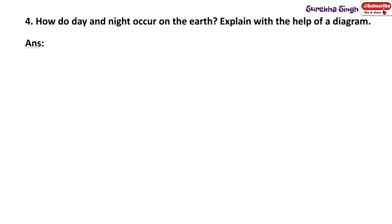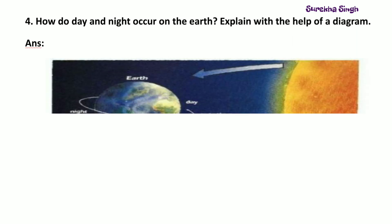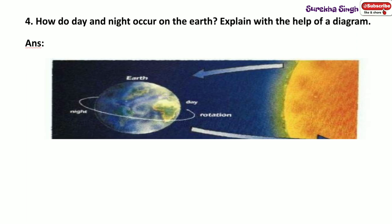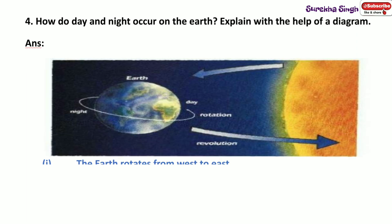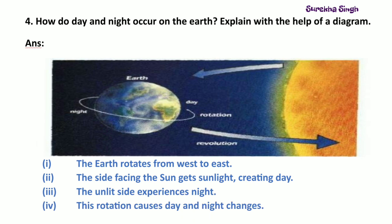Question 4: How do day and night occur on the earth? Explain with the help of a diagram. The earth faces the sun while rotating from west to east. Each part of the earth facing the sun is illuminated by sunlight turn by turn. The lighted half part of the earth that faces the sun has day. The other part that is not facing the sun experiences night. This is how the day and night occur on the earth.